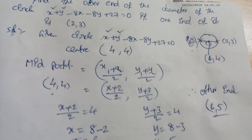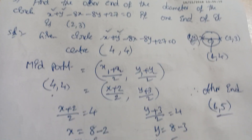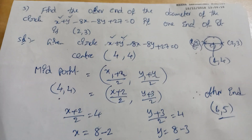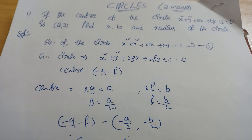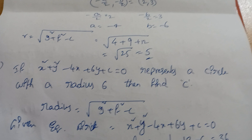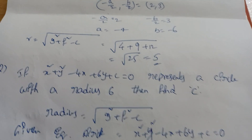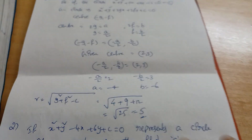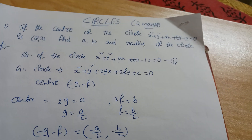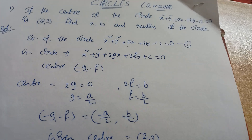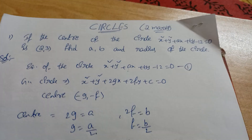That's how to find the other end when one end is given — use the center as midpoint and apply the midpoint formula. These are circles two-mark shortcuts. Next video will cover two-mark questions on system of circles. Okay, bye, all the best!